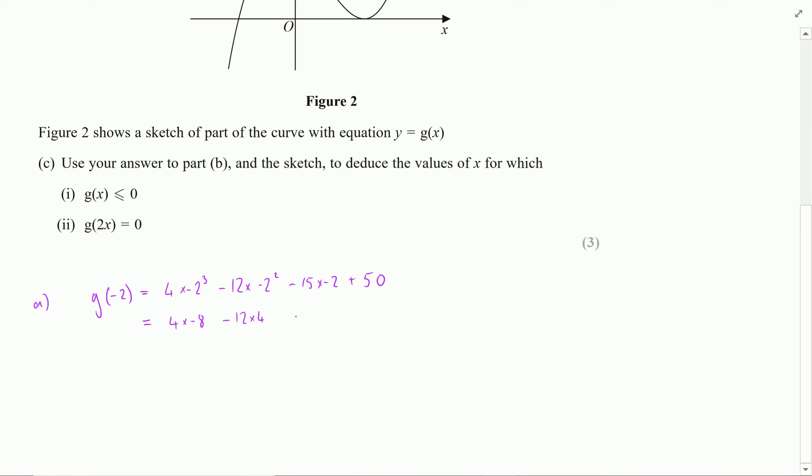Minus 15 times minus 2 is going to give me plus 30 plus 50 which is minus 32 minus 48 plus 80. And I'm convinced at this point that I can say that that's equal to 0 and happy days.